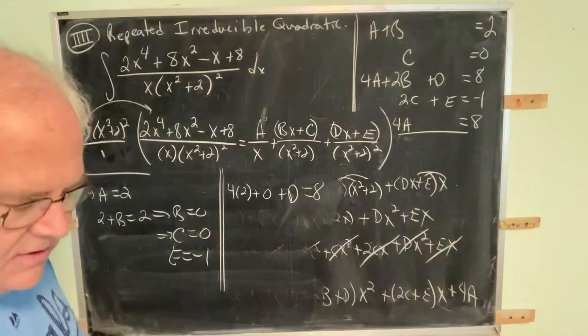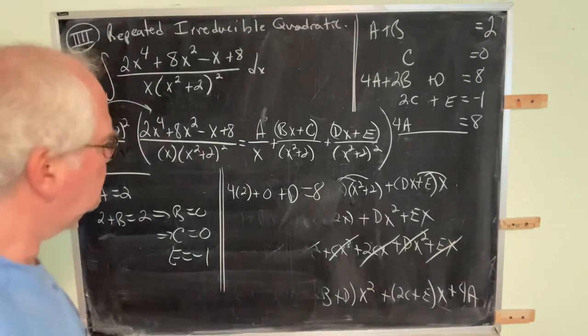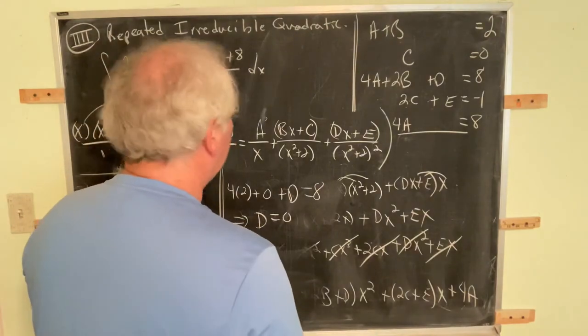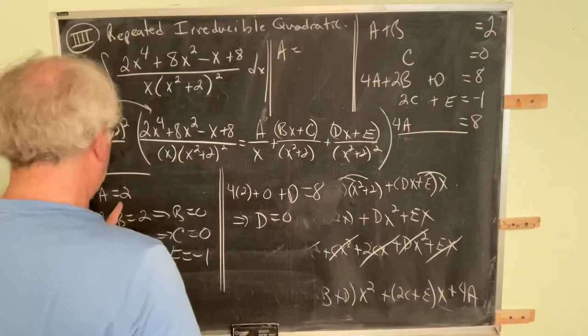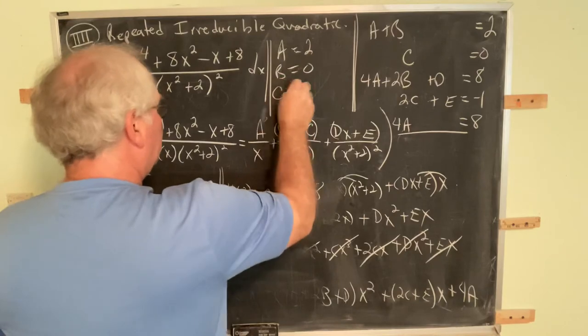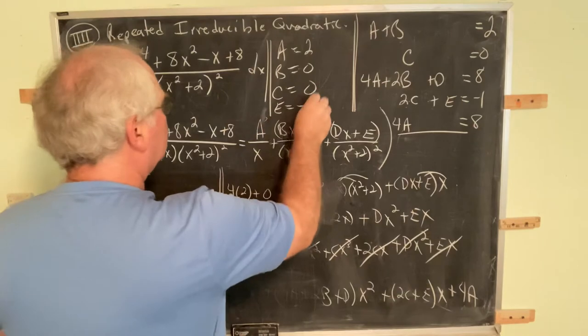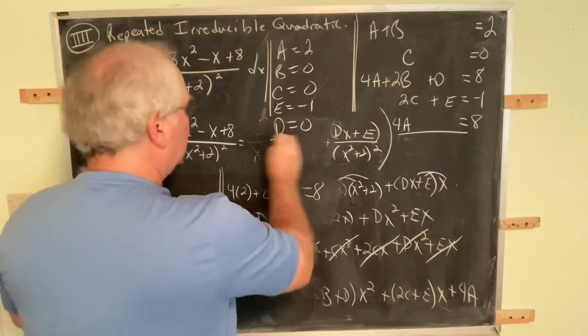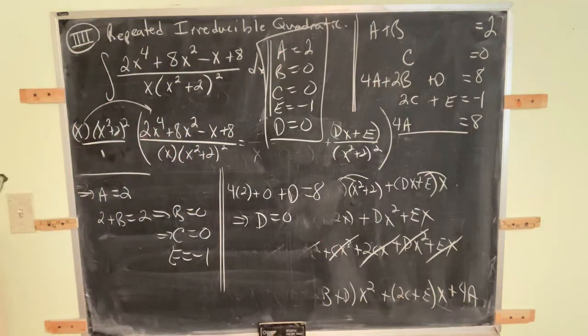And that gives us that I believe D is equal to 0. So, if I've done this correctly, and there's no guarantee of that, what I have: A is equal to 2, B is equal to 0, C is equal to 0, E is equal to negative 1, and D was equal to 0. So, according to my computation, those are the coefficients, and I think that actually looks right.